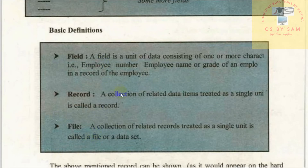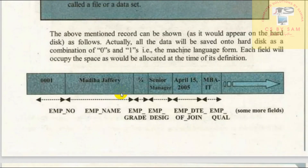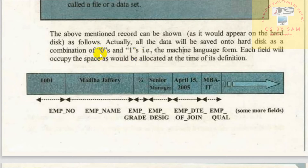We have already discussed these definitions in detail. After that, we will see how the above-mentioned record appears on the hard disk. This record is saved on the hard disk. All data is saved on the hard disk as a combination of zeros and ones. As computer science students, we already know that the hard disk stores data in binary numbers — zeroes and ones.